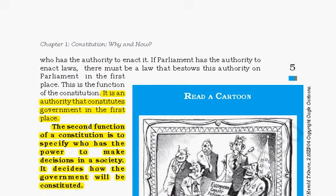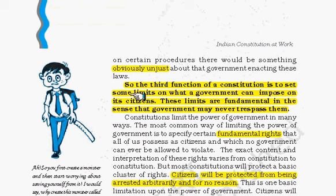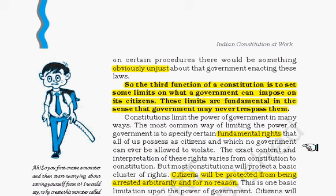The third function is that it provides limitations on the power of the government. For example, if there is a majority in rule then there are possibilities that minorities will get discriminated. Hence the constitution limits the powers — it provides a set of limits which government can impose on citizens, and these limits are fundamental in the sense that government may never trespass them. The most basic example of this is fundamental rights. Fundamental rights limit the power of the government, which cannot violate the basic human rights of citizens — for example, a citizen is protected from being arrested arbitrarily or for no reason, under fundamental right Article 22.